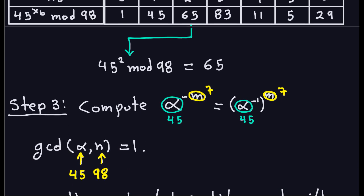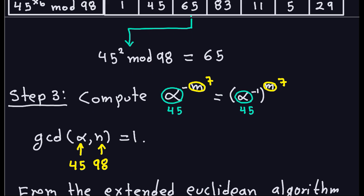Step three is to compute alpha to the negative m, which means computing the inverse of alpha and raising it to the power m. Here alpha is 45 and m is 7, so we need (45^{-1})^7 mod 98.